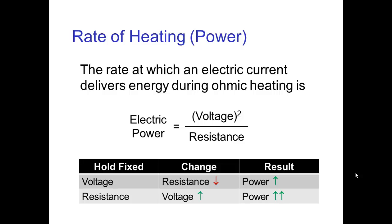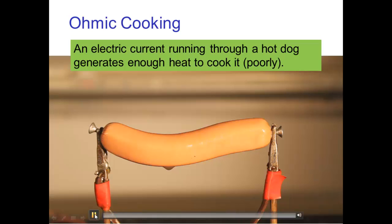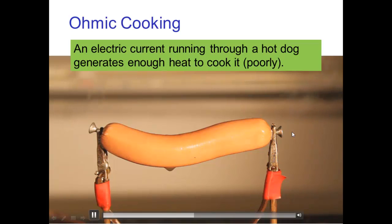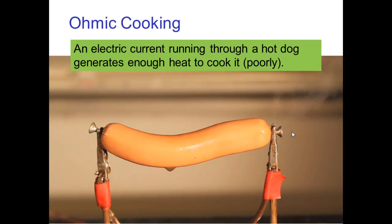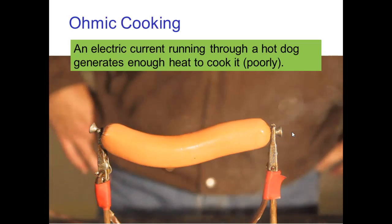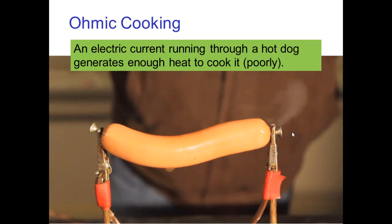If we double the voltage, the rate of heating goes up by a factor of four. Here's an example of using an electric current passing through this hot dog. Those two connectors are connected to the wall, and you can see steam coming out of the ends of the hot dog. You can hear the steam whistling out. We have an electric current passing through the hot dog, and you can now see very clearly the steam coming out.